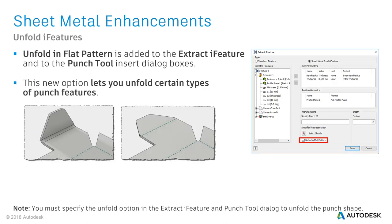Another very nice option has been added to the Extract Eye feature and Punch Tool Insert dialog boxes. Previously, Inventor didn't support unfolding sheet metal eye features. Now you can specify the Unfold capability during the Eye feature creation by simply using the Unfold in Flat Pattern checkbox. Please be aware that you need to activate the checkbox in the Extract Eye feature and Punch Tool dialog to unfold the punch shape.